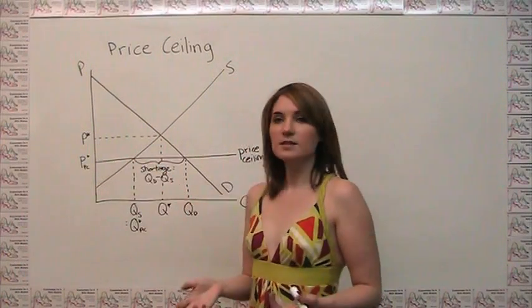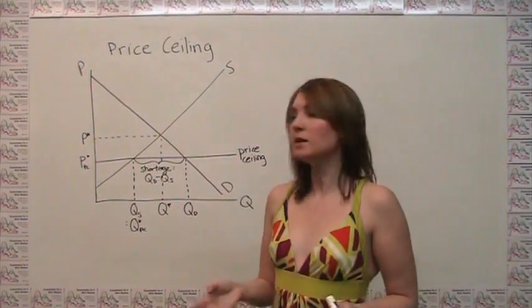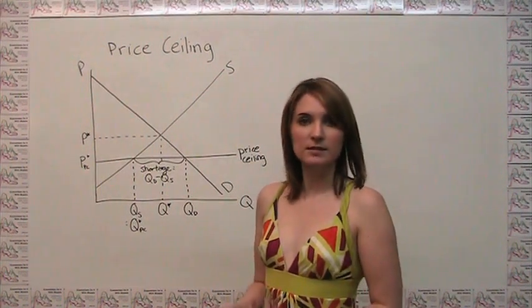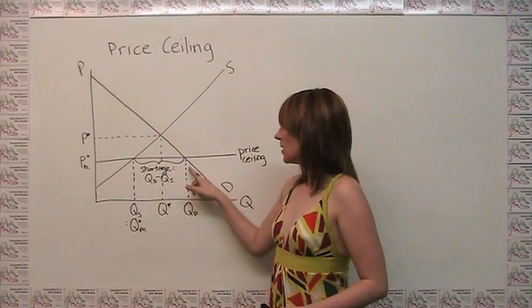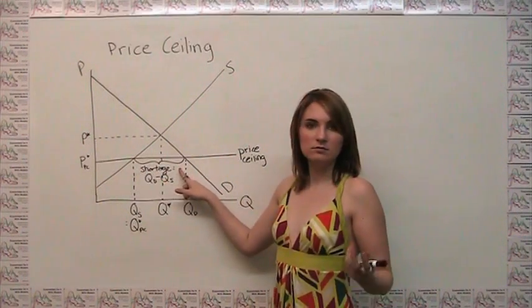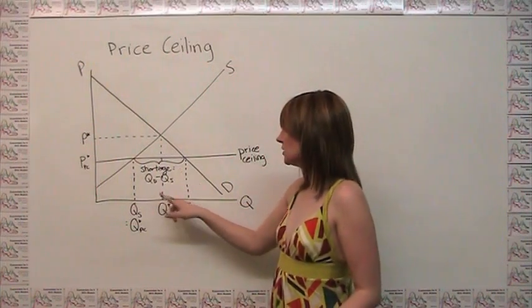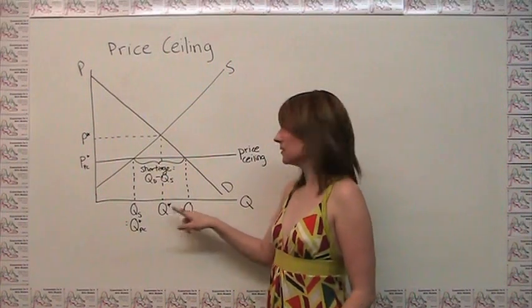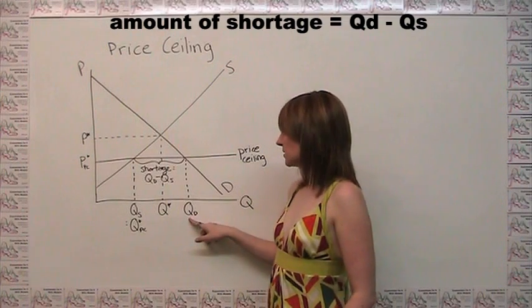Now the reason for this is while lower prices induce consumers to want to buy, lower prices also cause producers to shift their resources elsewhere. So what we get here is a gap between the quantity demanded and the quantity supplied, which we call a persistent shortage. To calculate the amount of the shortage, we just say that's how much bigger the quantity demanded is than the quantity supplied, because the quantity demanded is the bigger number here.